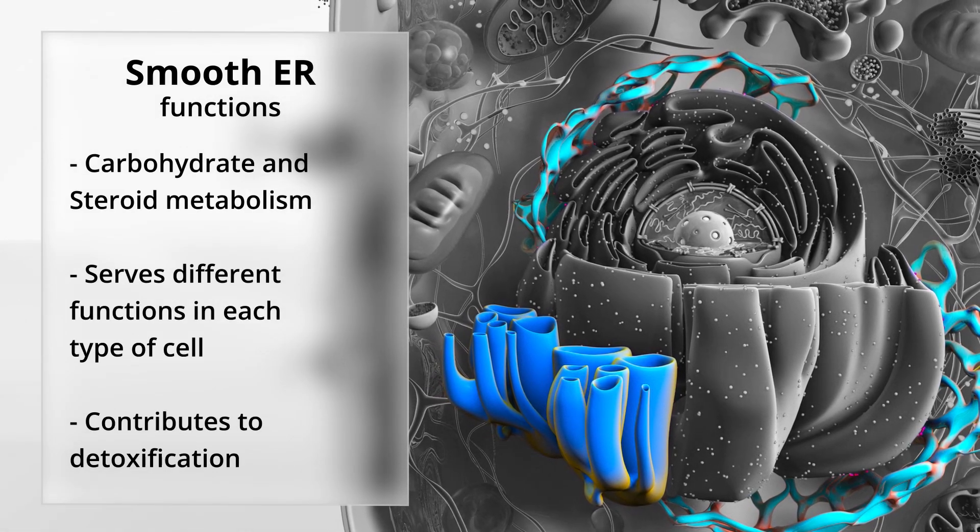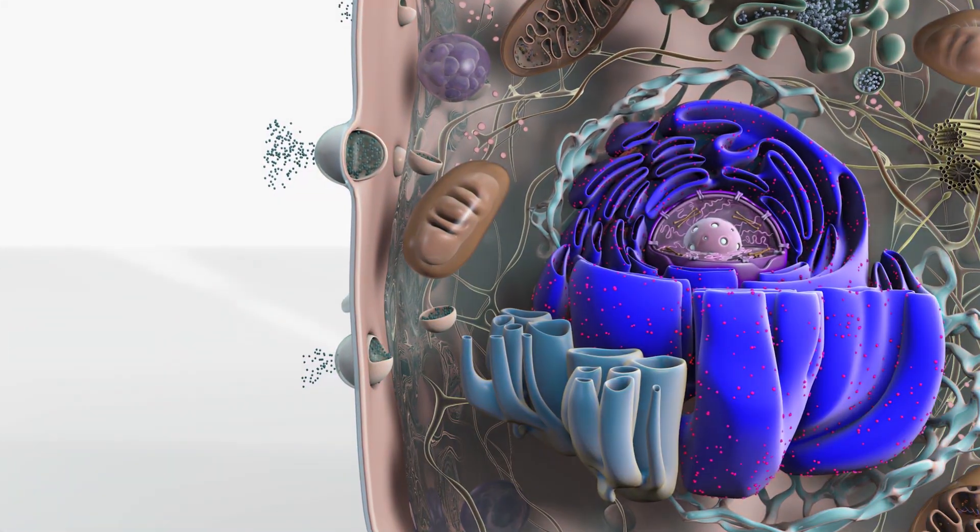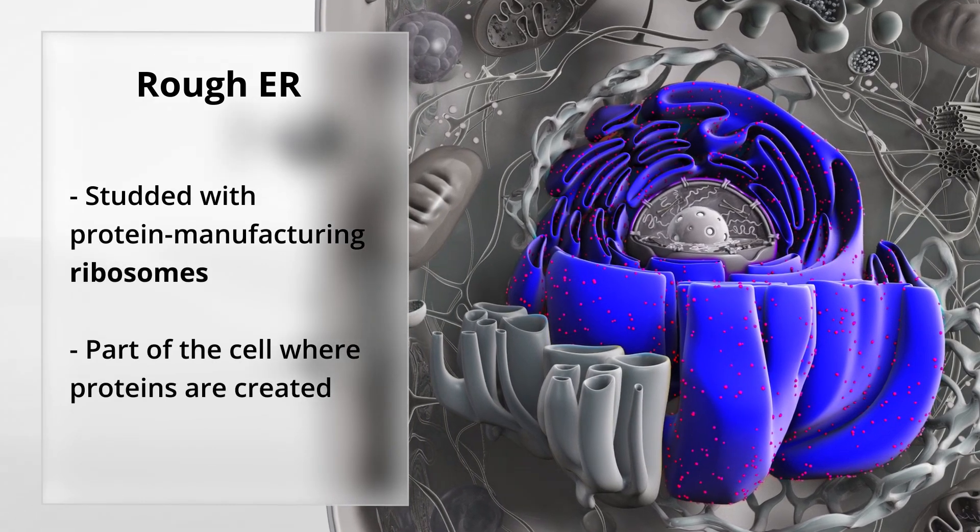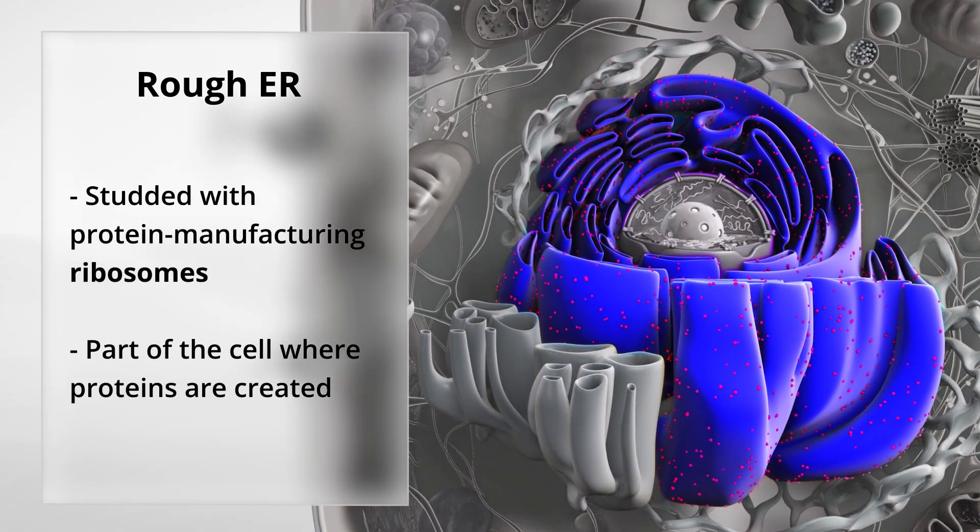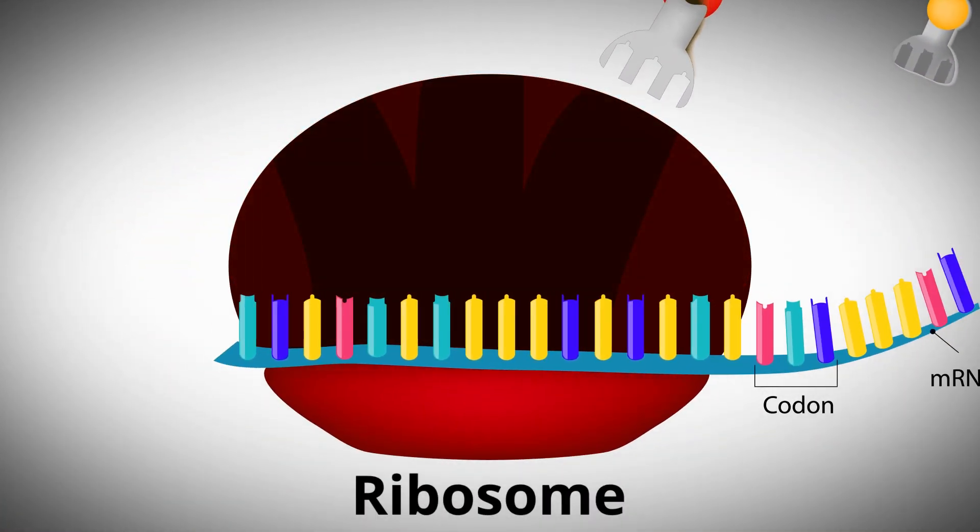Smooth ER serves different functions in each type of cell and contributes to detoxification. The rough endoplasmic reticulum is studded with protein manufacturing ribosomes.